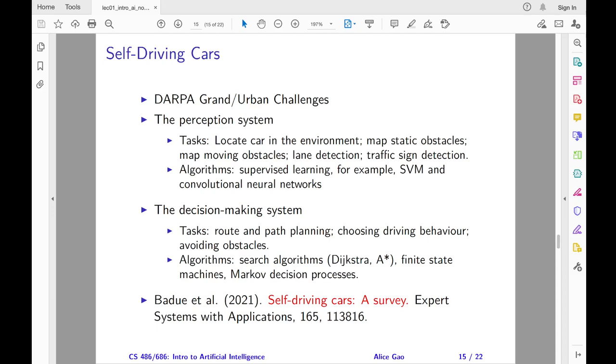The perception system needs to perform tasks such as locating the car in the environment, recognizing static and moving obstacles, detecting lane markings on the road, and understanding traffic signs. Many of these tasks can be accomplished using supervised learning algorithms, such as support vector machines and convolutional neural networks.